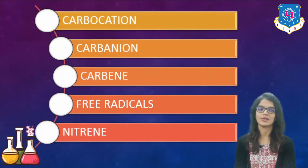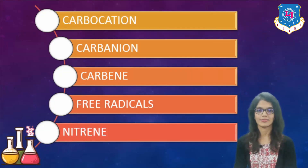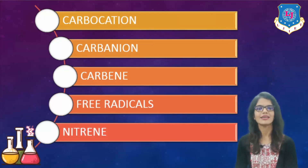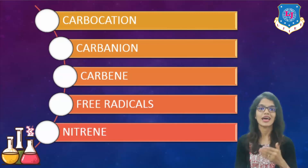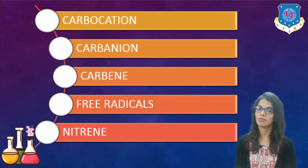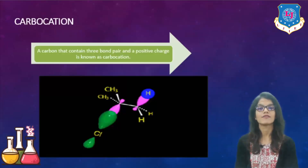Here we have a total of 5 different kinds of reaction intermediates. Number one is carbocation. After that, carbanion. After that, we have carbene. Then, free radicals. And then, nitrenes. So 5 different types are there: carbocation, carbanion, carbene, free radicals, and nitrenes. These are various types of reaction intermediates which generally occur in any organic reaction. We will see them one by one.